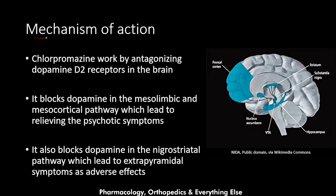Now let's talk about the mechanism of action. Chlorpromazine works by antagonizing the dopamine D2 receptors in the brain. It blocks dopamine in the mesolimbic and mesocortical pathways, which leads to relieving of psychotic symptoms. The symptoms of schizophrenia and psychosis are caused by increased dopamine in these pathways. The mesolimbic pathway connects the ventral tegmental area to the nucleus accumbens, and the mesocortical pathway connects the ventral tegmental area to the frontal cortex.